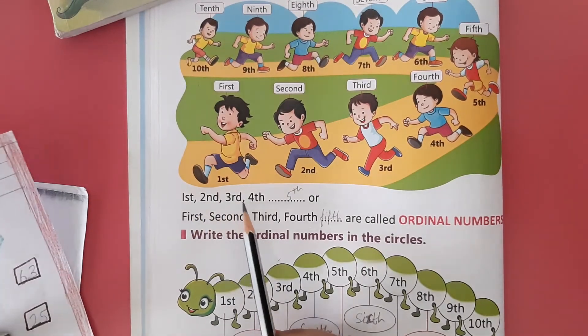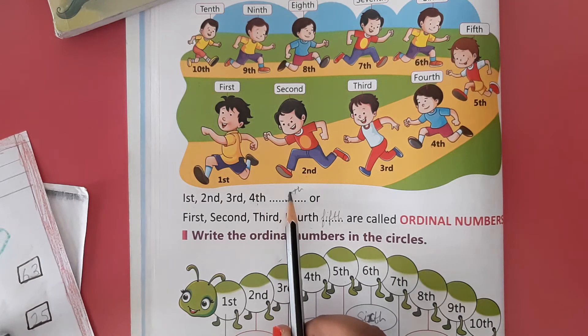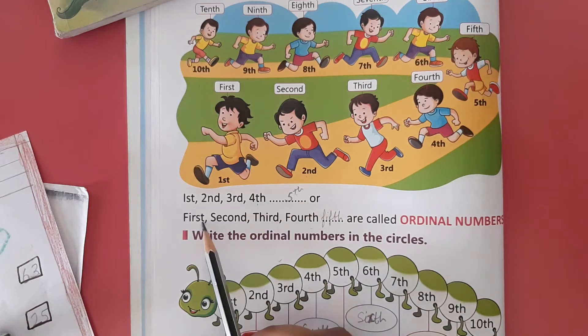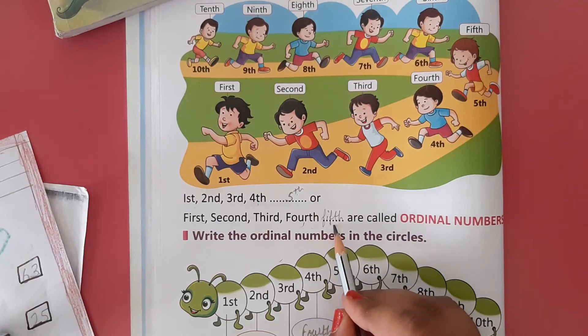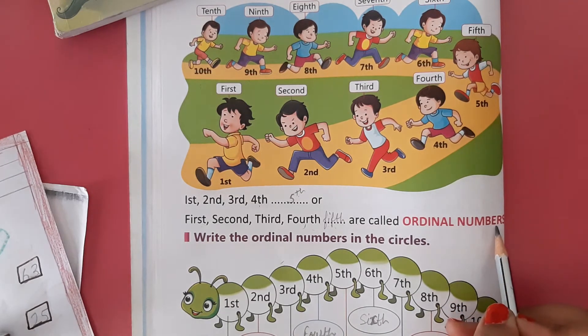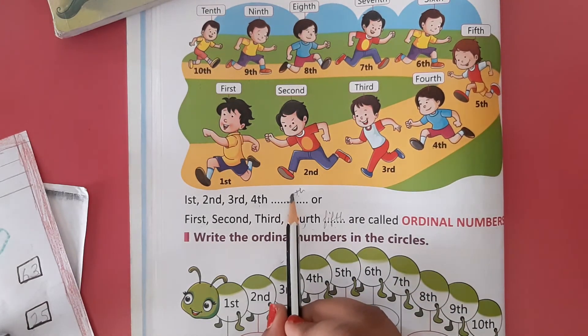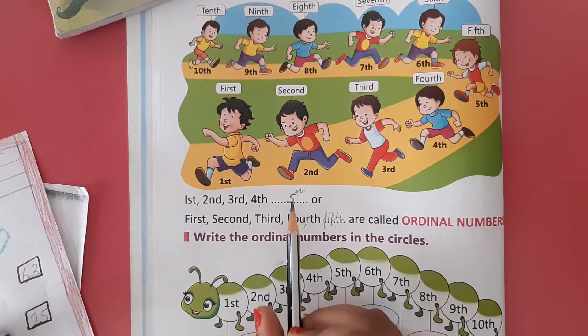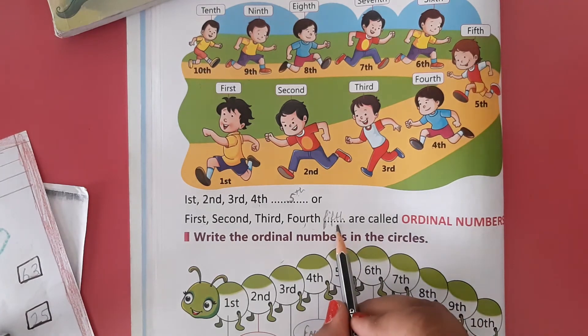First, second, third, fourth - you have to fill this blank with fifth, F-I-F-T-H. You have to fill this blank with the number name fifth.